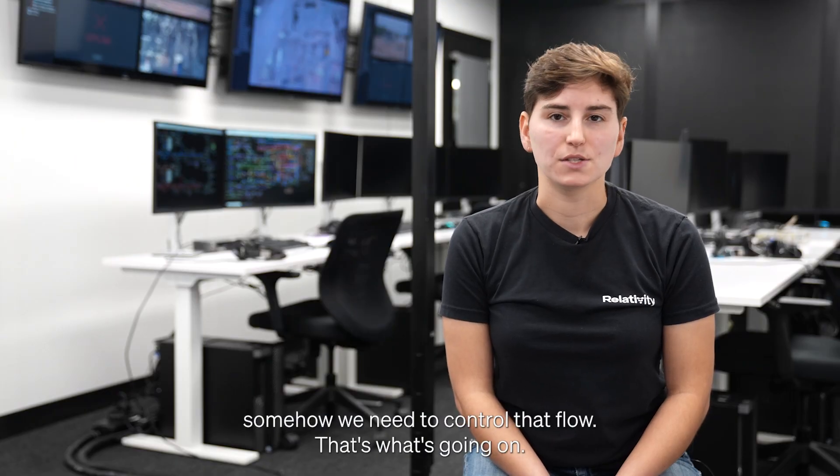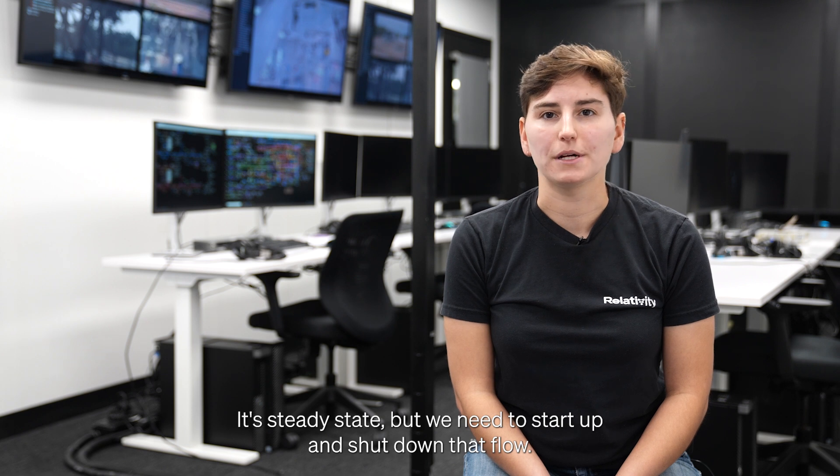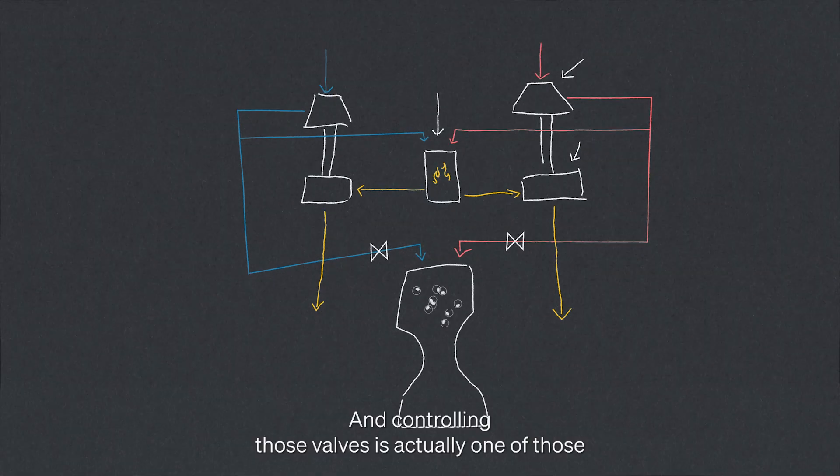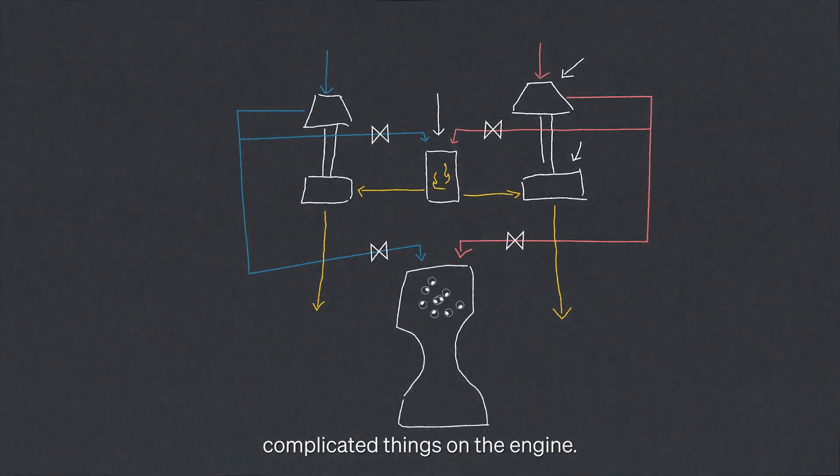Somehow we need to control that flow. That's what's going on in steady state, but we need to start up and shut down that flow. So we have valves in the main lines and in the gas generator circuit, and controlling those valves is actually one of the most complicated things on the engine.